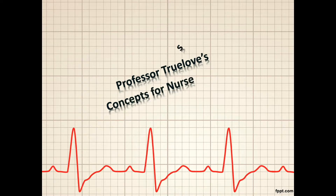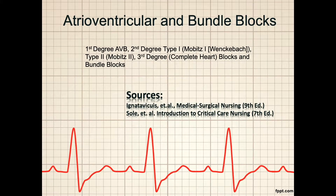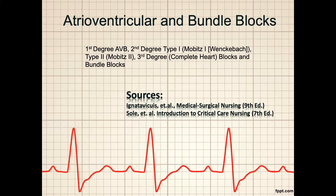Hi y'all, and welcome back. This is Professor Trulove's Concepts for Nurses series, and I am Professor Terry Trulove. In this episode, part of the cardiac series and specifically the ECG series, we are going to be looking at atrioventricular and bundle blocks — that is, AV blocks and BBB — including first, second, and third degree type blocks, and left and right bundle branch blocks. Sources for this episode include Iggy's Medsurg Nursing, 9th edition, and Sol's Introduction to Critical Care Nursing, 7th edition.